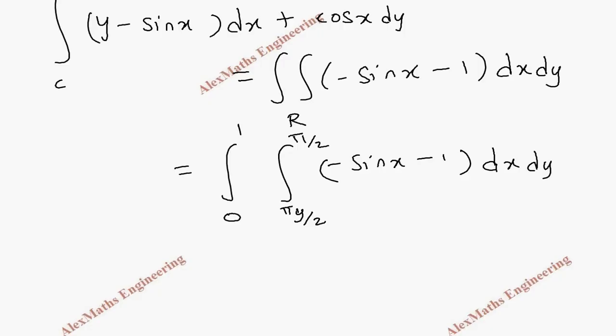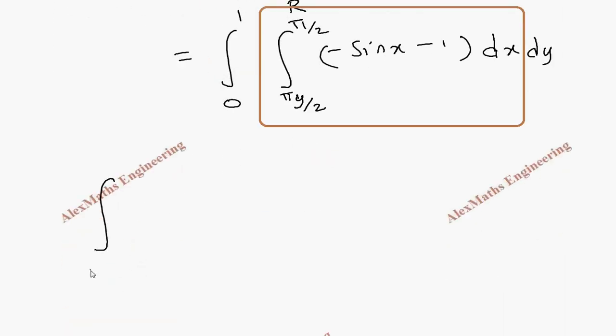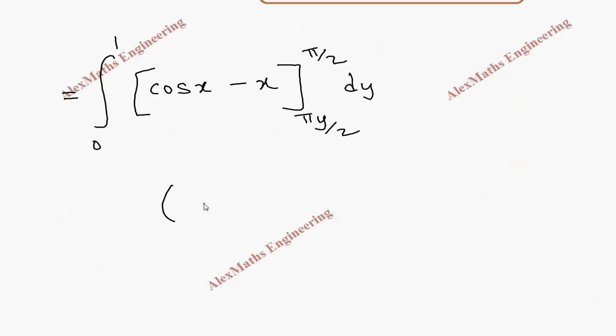So first we are going to evaluate the integration with respect to x. So outside integral 0 to 1. This integration is cos x minus x. And we have to substitute the limit for x, which is pi y by 2 till pi by 2. Then we have dy. When we substitute the upper limit, cos 90 is 0 minus pi by 2. Then minus lower limit is cos pi y by 2 minus pi y by 2.